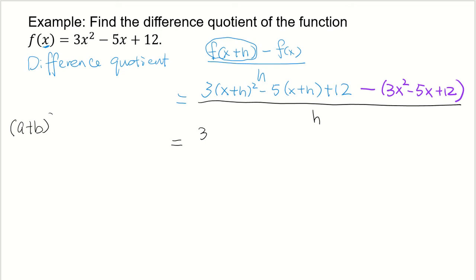a plus b squared equals a squared plus 2ab plus b squared. And a minus b squared equals a squared minus 2ab plus b squared. So I'm going to use the first formula here in this case, because this is kind of like a plus b squared.